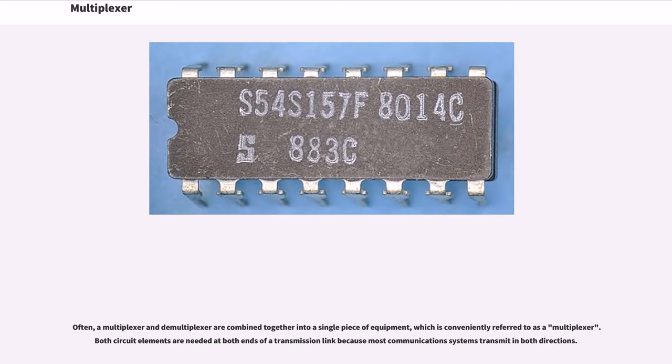Often, a multiplexer and demultiplexer are combined together into a single piece of equipment, which is conveniently referred to as a multiplexer. Both circuit elements are needed at both ends of a transmission link because most communications systems transmit in both directions.